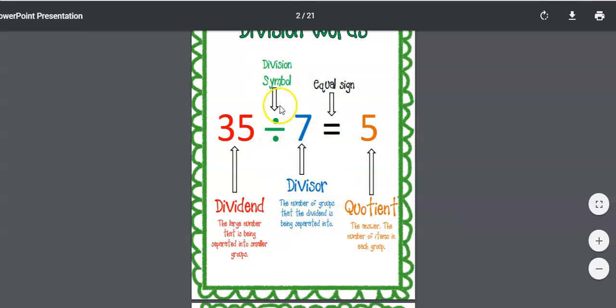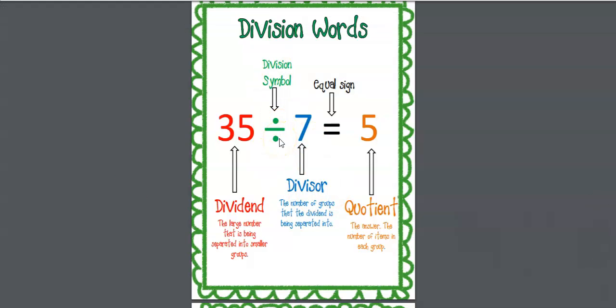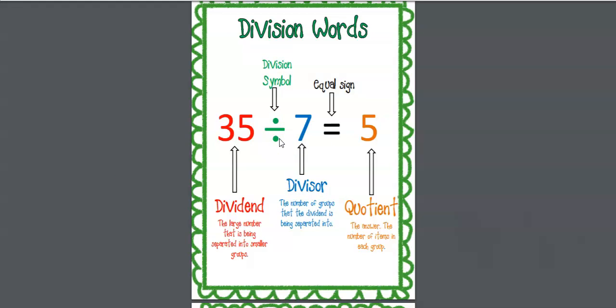This is a division symbol. And as we've learned before in class, there are many different division symbols, but this is one of them. Divisor is the number of groups that the dividend is being separated into. So the dividend is the bigger number that needs to be separated into groups. And the divisor is the number of groups that that dividend will be separated into.